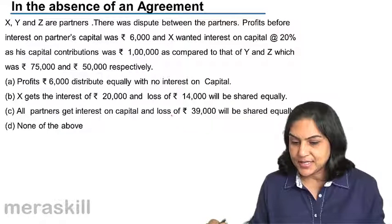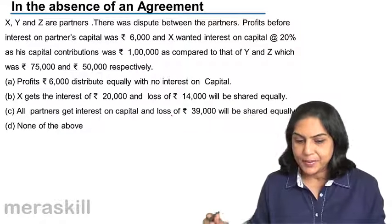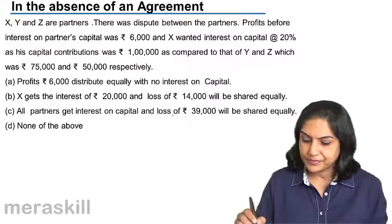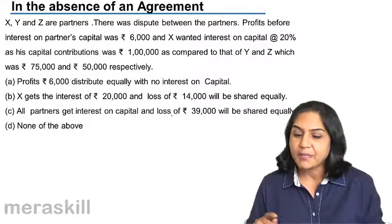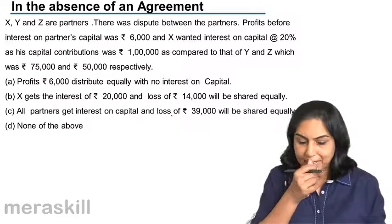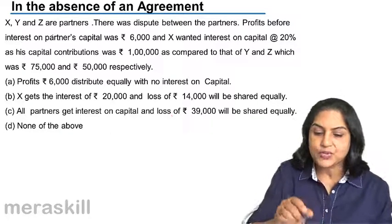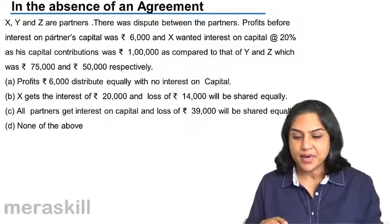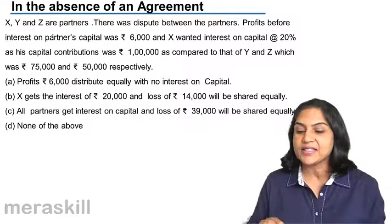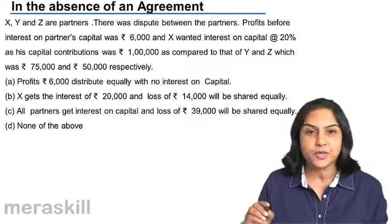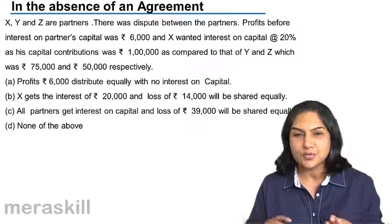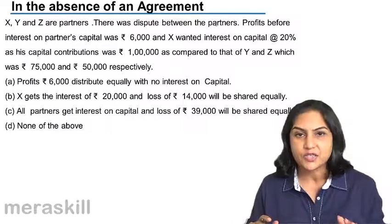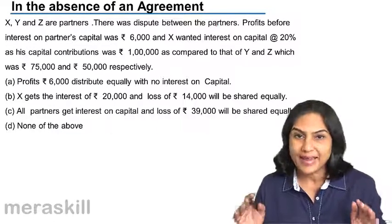Let us consider an example. In the absence of an agreement, X, Y, and Z are partners and there is a dispute between the partners. There is a dispute because there is no agreement.